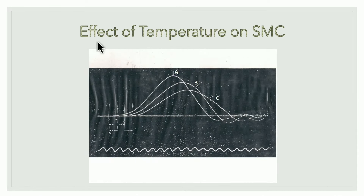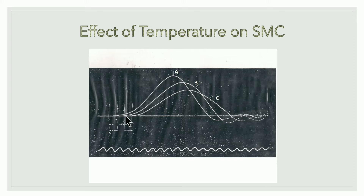The next graph is the effect of temperature on simple muscle curve. Here the frog muscle is dipped into various temperatures of Ringer lactate solution. The B graph is for normal saline at 37 degrees Celsius. The frog's muscle is dipped into Ringer lactate solution at 37°C, electrical stimulation is given, and this B graph is obtained — this is the effect of normal temperature.